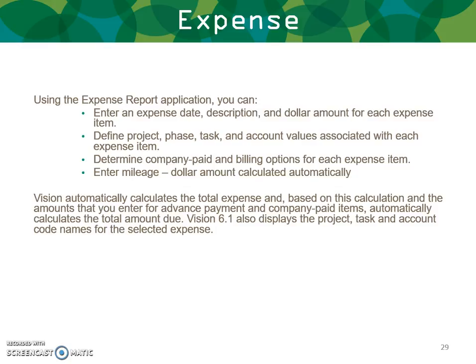Expenses: Using the expense report application, you can enter an expense date, description, and dollar amount for each expense item. Define project, phase, task, and account values associated with each item. Determine company paid and billing options for each expense item. Enter your mileage and the dollar amount is calculated automatically. Vision automatically calculates the total expense and, based on this calculation and the amounts you enter for advance payment, company paid items automatically calculates the amount due. Vision also displays the project, task, and account code names for the selected expense.